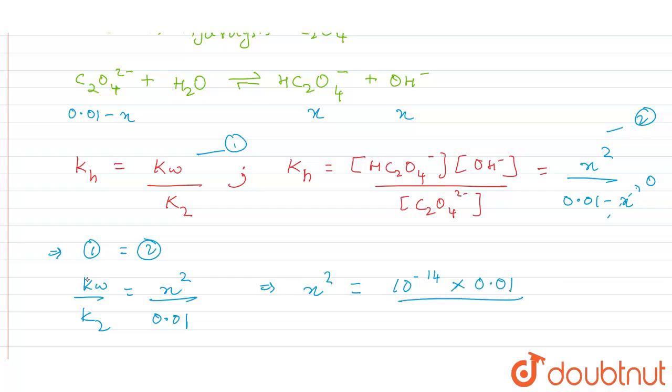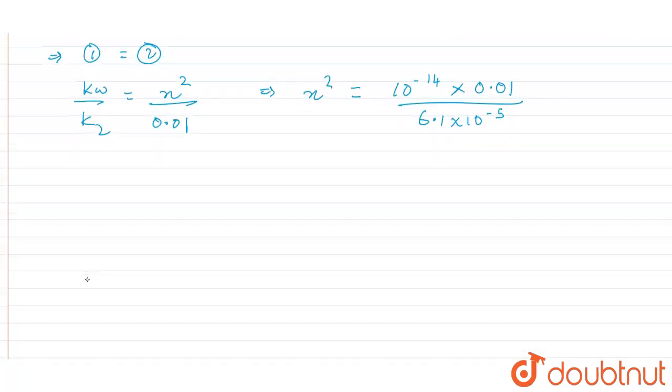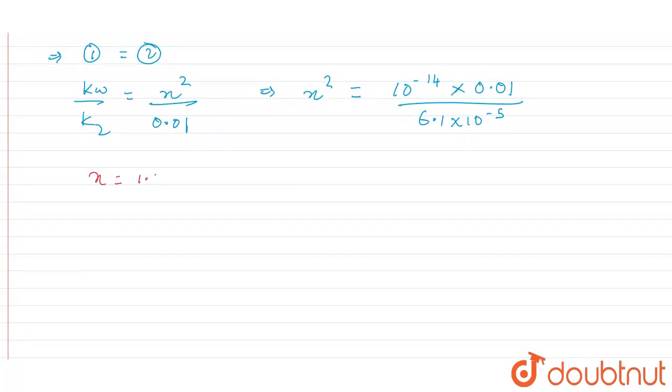So K2 value we know it is given in the question itself: 6.1 × 10⁻⁵. Once you do this, the value of x you are going to obtain will be equal to 1.28 × 10⁻⁶ molar.